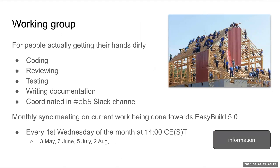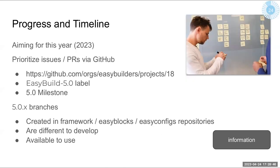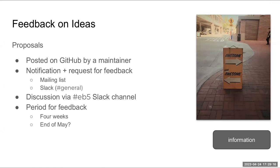To contribute: we're forming a working group for people who want to get involved with coding, reviewing, testing, and writing documentation. There's a Slack channel for it — eb5. We'll have monthly meetings on the first Wednesday of the month at 14:00 Central European Time, with the first four meetings already scheduled. We're aiming for a release this year. There's a GitHub project board, and EasyBuild 5 labels and milestones are already across the repositories. The 5.0.x branches are there and can be tested.